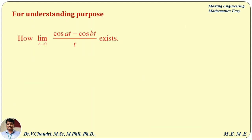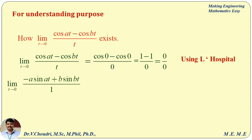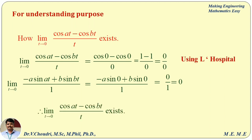To understand why the limit of (cos(at) − cos(bt))/t exists as t tends to 0: substituting t = 0 gives (cos 0 − cos 0)/0 = 0/0, an indeterminate form. Applying L'Hôpital's rule, differentiate numerator and denominator with respect to t: limit as t → 0 of (−a·sin(at) + b·sin(bt))/1. Substituting t = 0 gives (−a·sin 0 + b·sin 0)/1 = 0/1 = 0. So the limit exists, which implies the Laplace transformation of (cos(at) − cos(bt))/t exists.